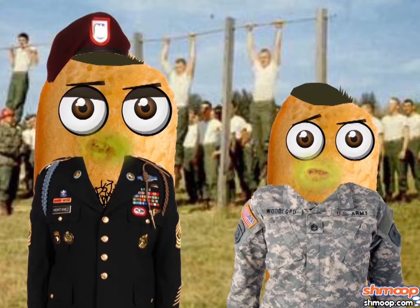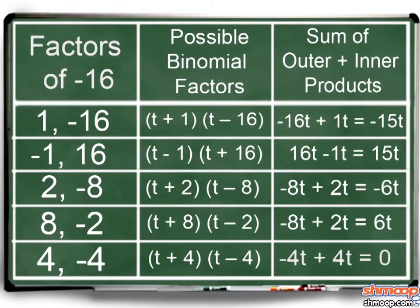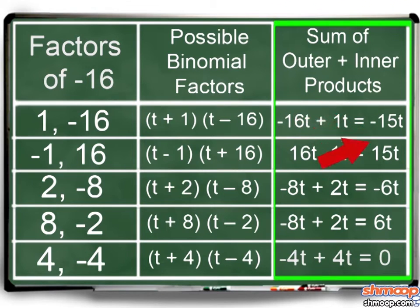Just like a soldier at boot camp, we've broken it down until it screams for its mommy. Here's a chart of all of the factors of negative 16, and a column for the sum of outer and inner products. We're looking for a middle term of 6t. There he is, hiding out.